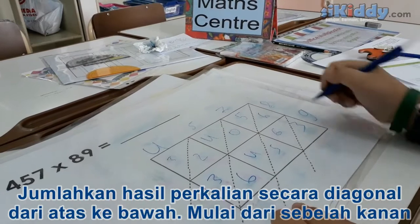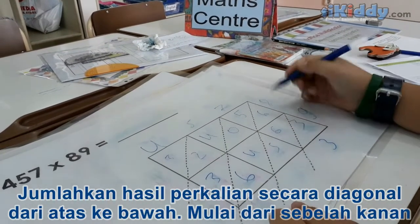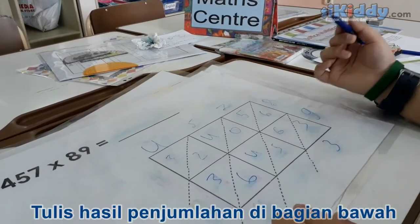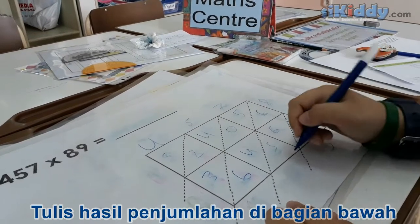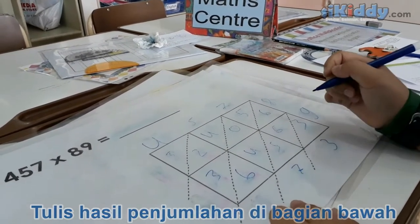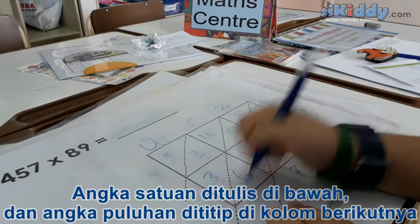Then, we plus it all. 3 has now 1 to carry, so 3. 6 plus 6 plus 5, it's 17, so you put 7 here, and then 1 down here.